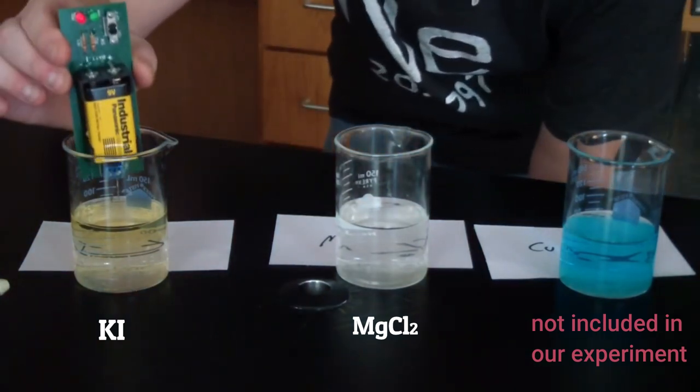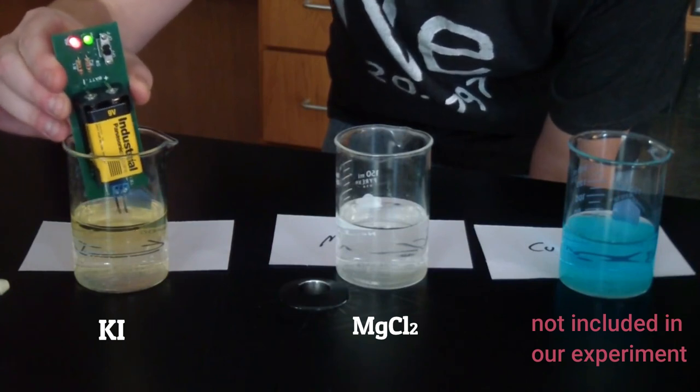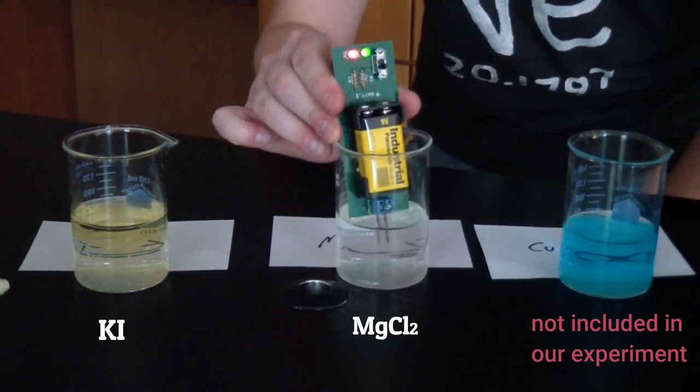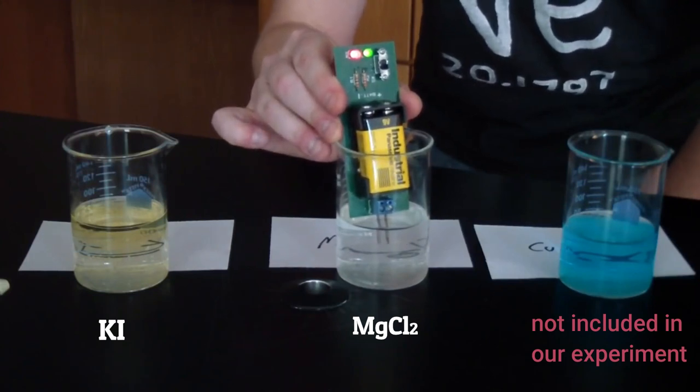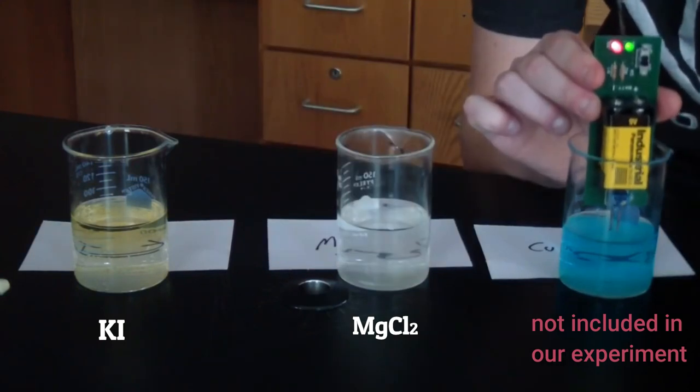So this is an ionic compound called potassium iodide. And you can clearly see the lights are coming on, so this does conduct electricity. This is magnesium chloride, also an ionic compound, and it conducts electricity. Here is another ionic compound called copper nitrate,